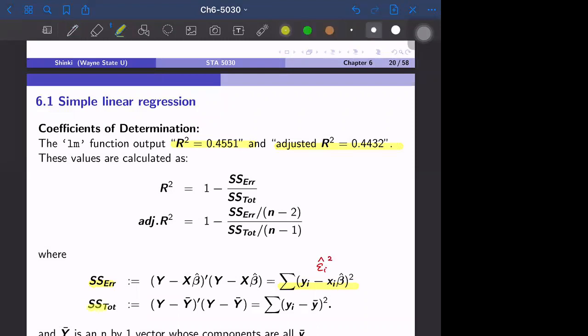And SS_total is defined by just the variability of data. So y_i minus y_bar squared. So it evaluates how much variability that y, the response variable, has. So R-square is 1 minus SS_error over SS_total.